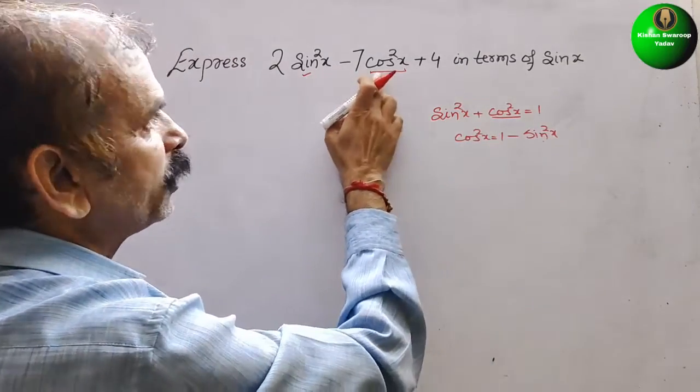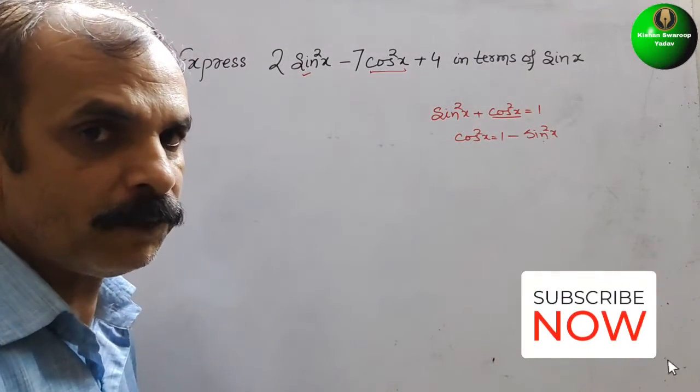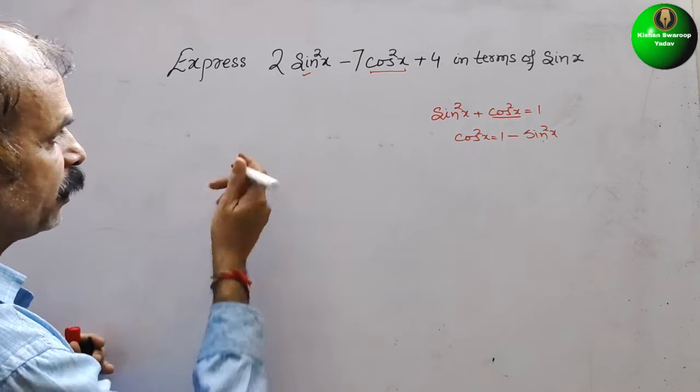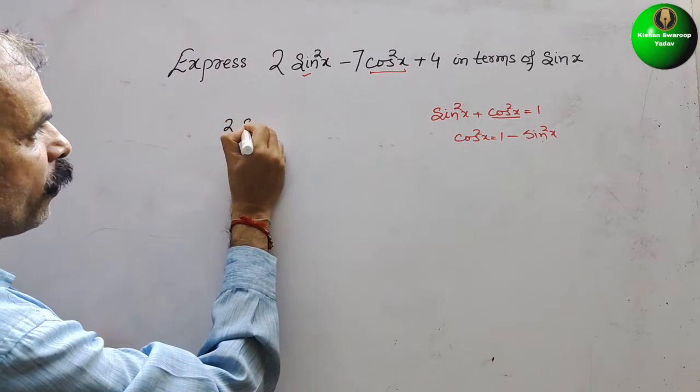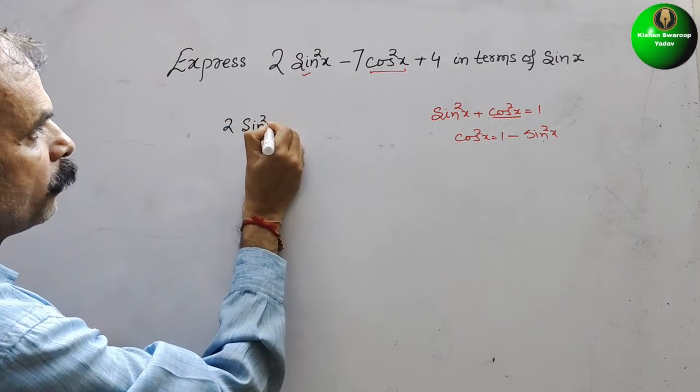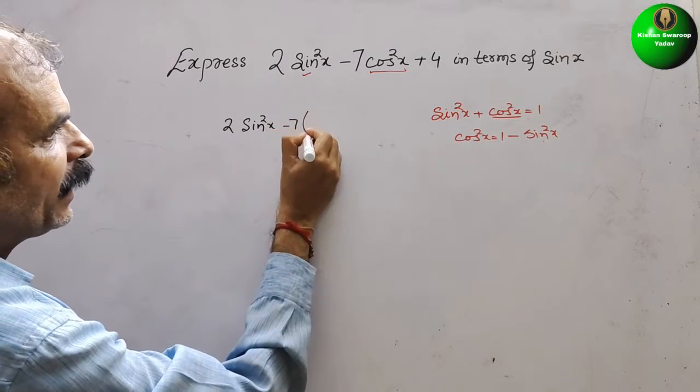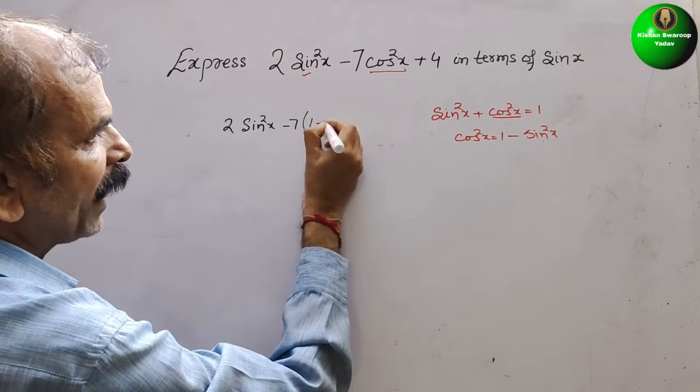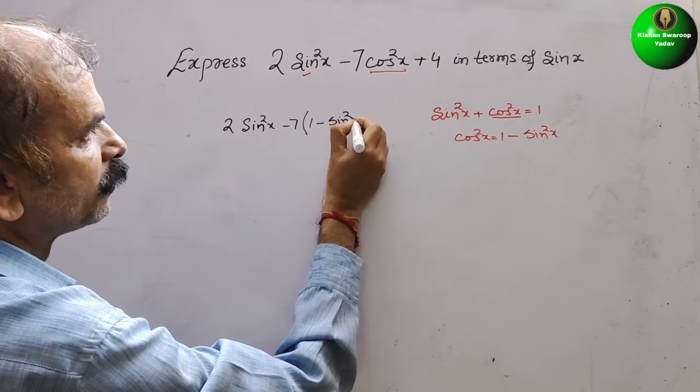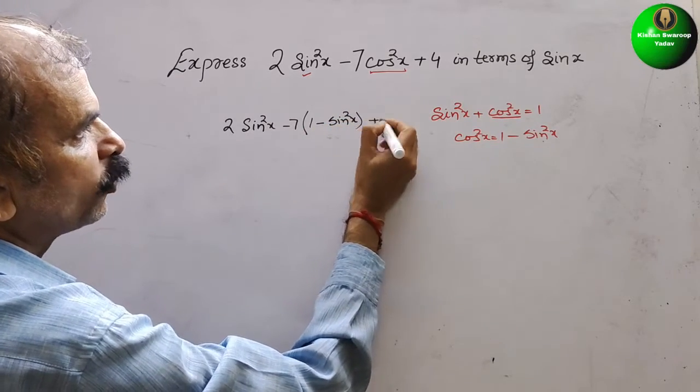This value you have to substitute here. So we will get 2 sin square x minus 7, and in bracket it will be 1 minus sin square x, plus 4.